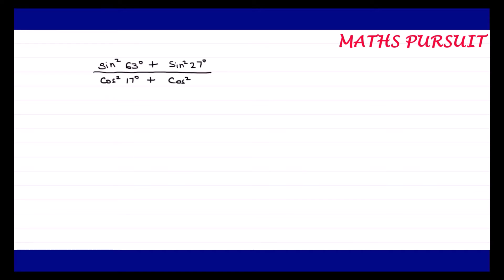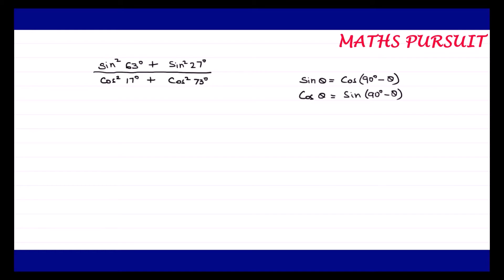So we are going to evaluate this and see what result we get. Before moving ahead, let me tell you certain fundamental things — just to recap. We know that sin θ = cos(90° − θ). Similarly, cos θ = sin(90° − θ). We are going to use these identities in our evaluation. Also, sin²θ is nothing but sin θ to the power 2, and we can write it that way.